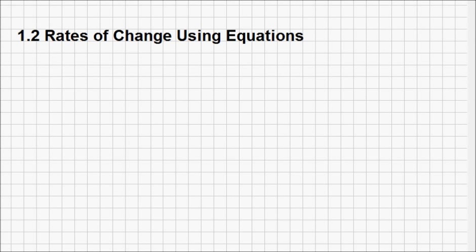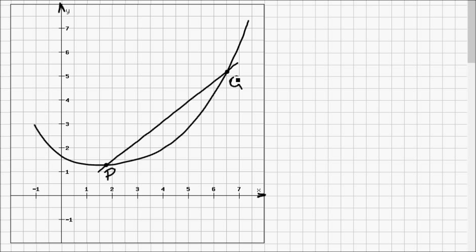We now know the difference between an average rate of change and an instantaneous rate of change. If we revisit the sketch from the previous lesson, you have points P and Q that are going to give us an average rate of change for this function on the interval PQ.